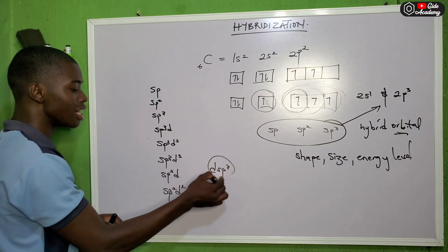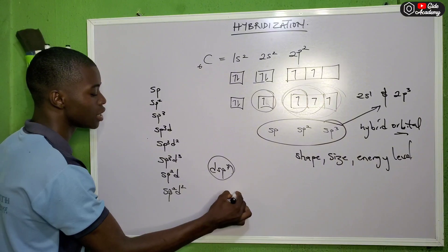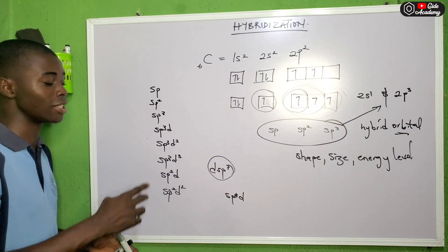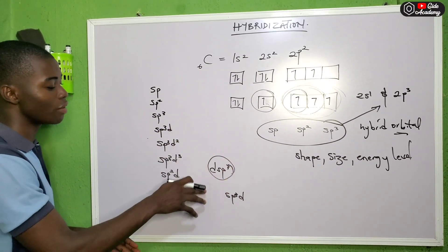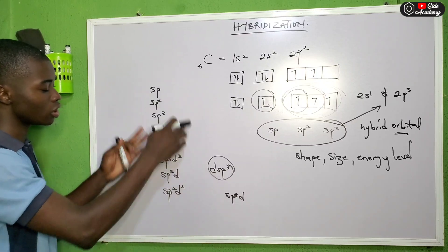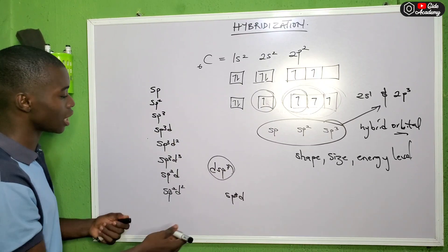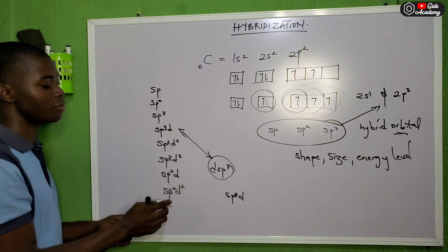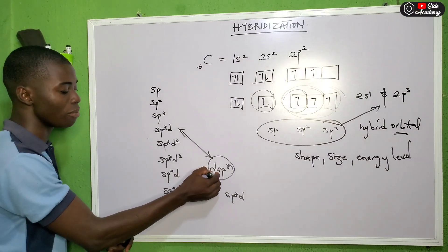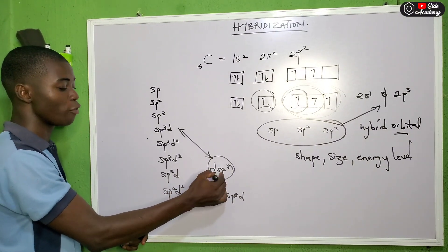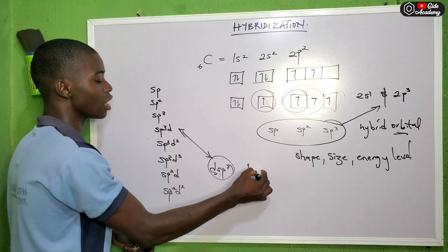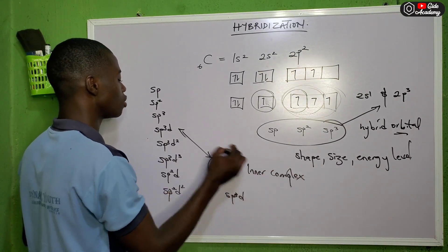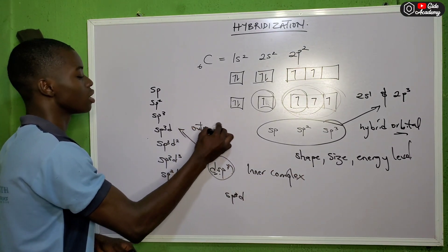For advanced chemistry students, note the difference between dsp3 and sp3d. When the d orbital comes before the s, it refers to an inner complex; when it comes after, it is an outer complex.